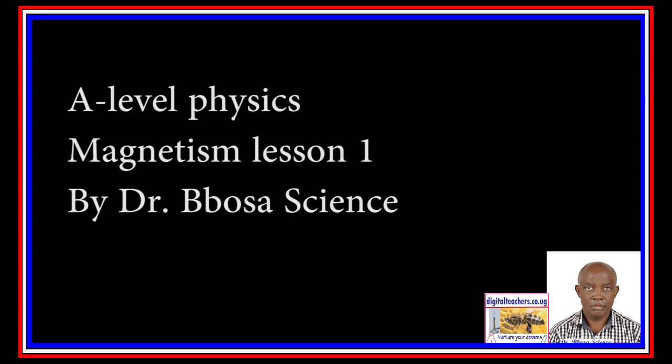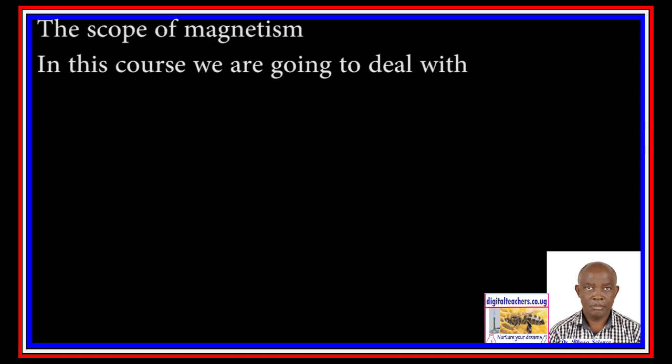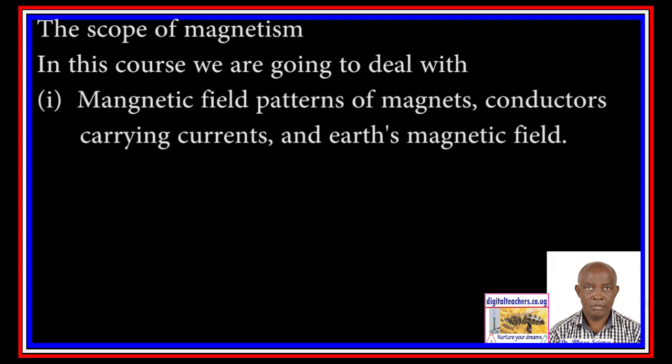Today we are going to study A-level Physics, Magnetism Lesson 1. Magnetism is a force of attraction or repulsion by some objects to others. In this course of magnetism, we are going to deal with: 1. Magnetic field pattern of magnets, conductors carrying currents, and Earth's magnetic field.